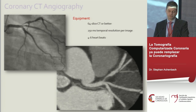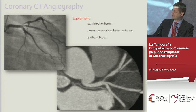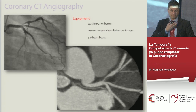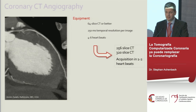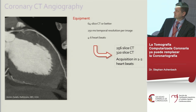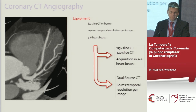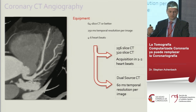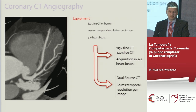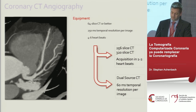The minimum prerequisite is a 64-slice CT scanner, providing temporal resolution of approximately 250 milliseconds requiring four to six heartbeats to cover the heart volume. More modern scanners with 256 or 320 slices can cover the heart in one or two heartbeats. Dual-source CT combines two tubes and two detectors in one gantry, improving temporal resolution dramatically — the most modern dual-source scanners achieve 60 milliseconds per image, far better than the 250 milliseconds of 64-slice scanners.